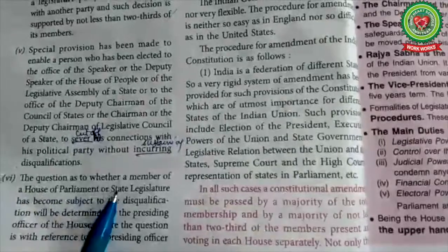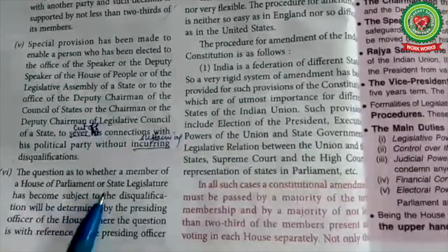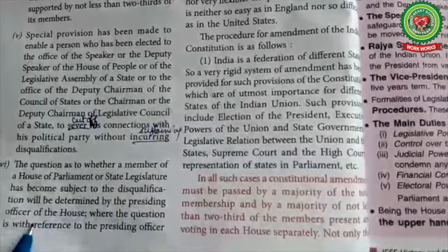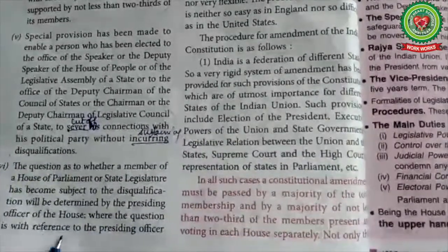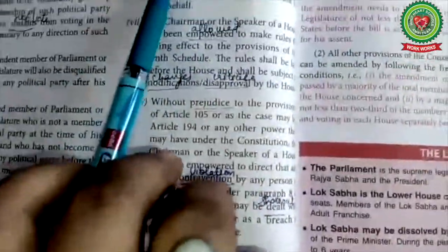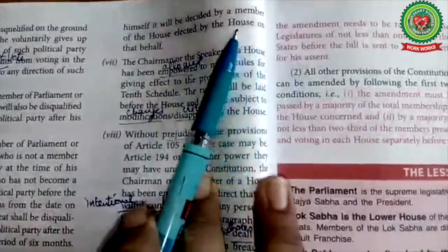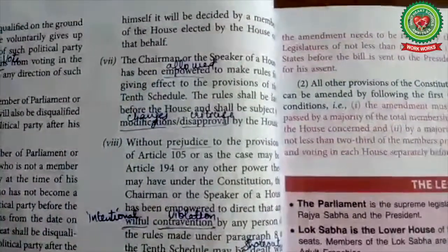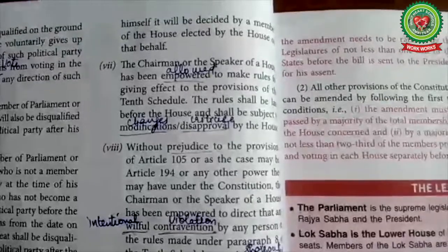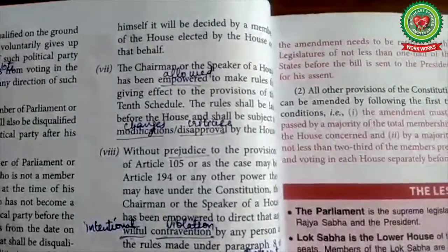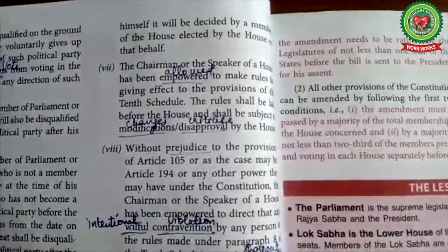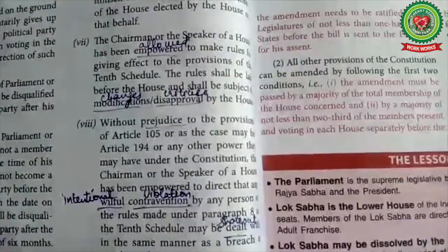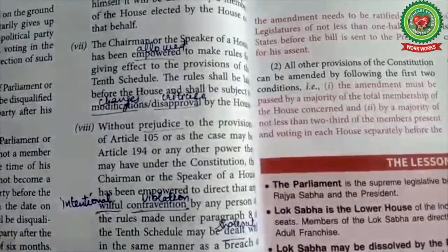The question as to whether a member of a house of parliament or state legislature has become subject to disqualification will be determined by the presiding officer of the house. Where the question is with reference to the presiding officer himself, it will be decided by a member of the house elected by the house on that behalf. Any question regarding disqualification of a member arising out of defection is to be decided by the presiding officer of the house.